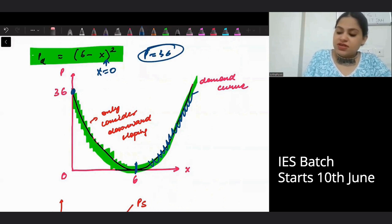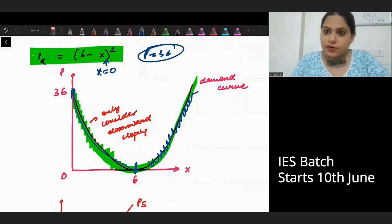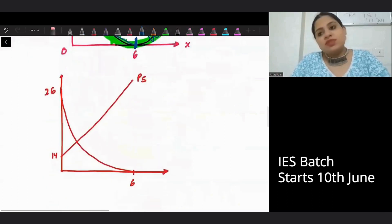So that means this is 36 and this is 6. And I am only concerned with this part of my demand curve.